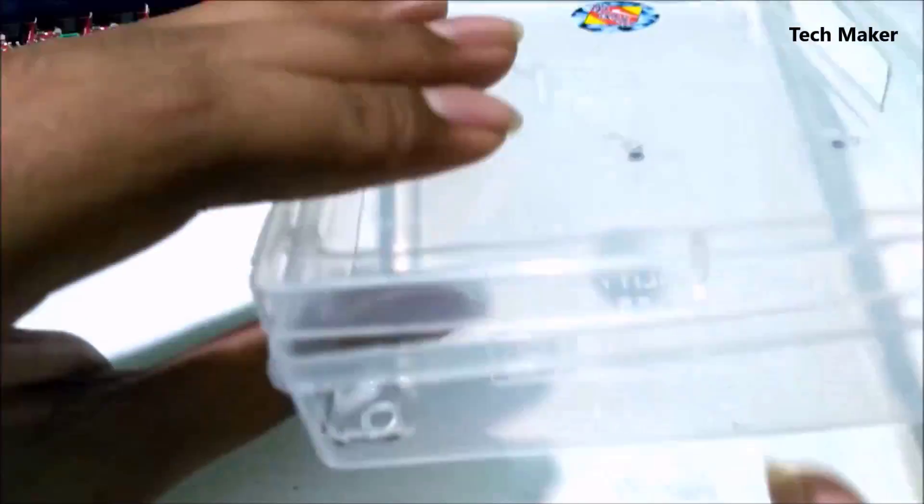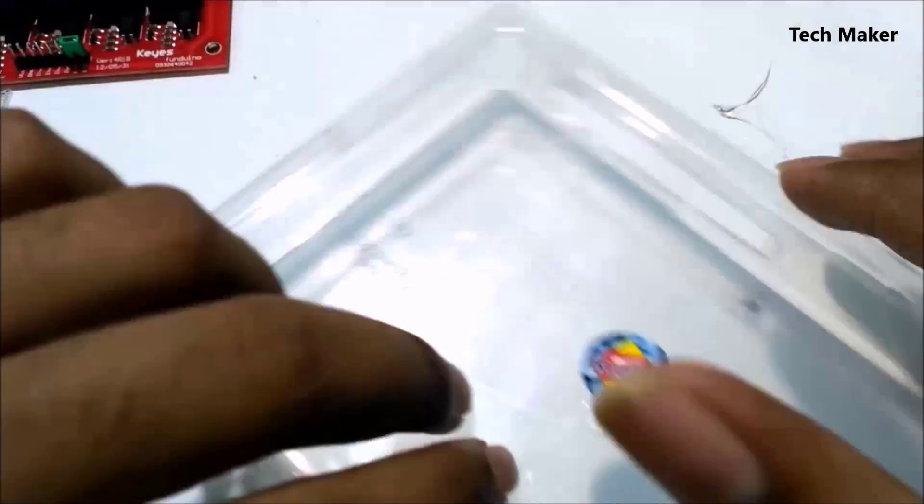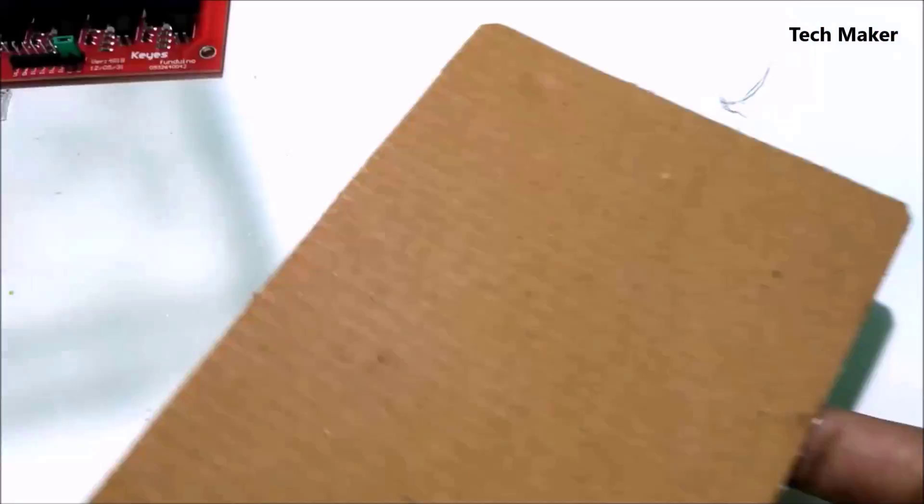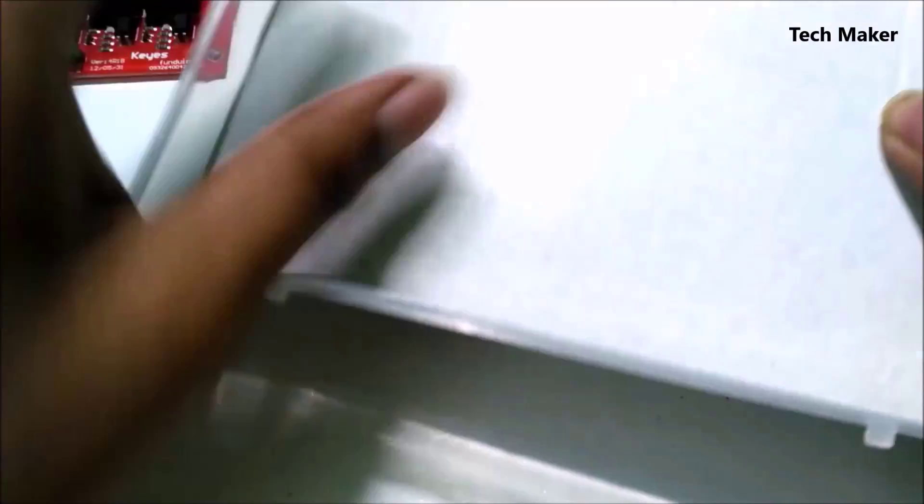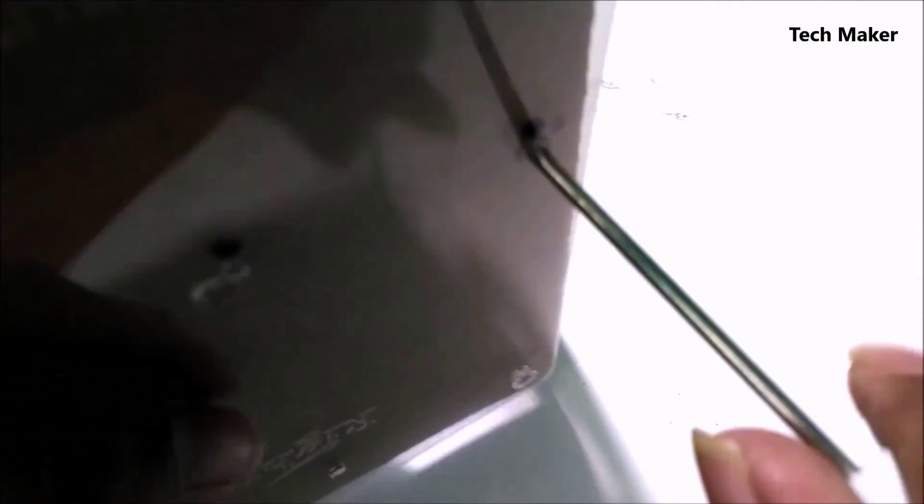After making holes, this is how the box looks like. Take a suitable size of cardboard and place it in the box. Now we have to make holes in the cardboard.